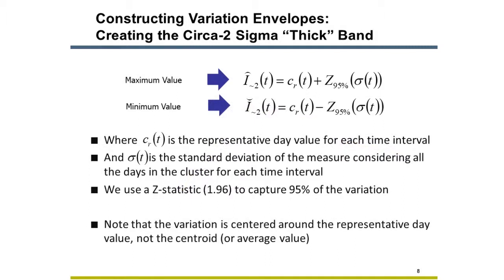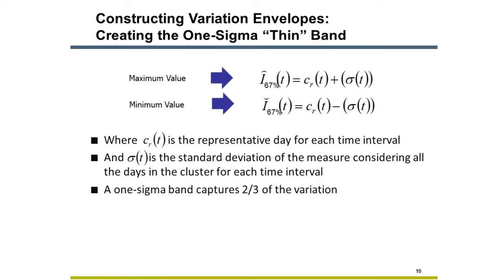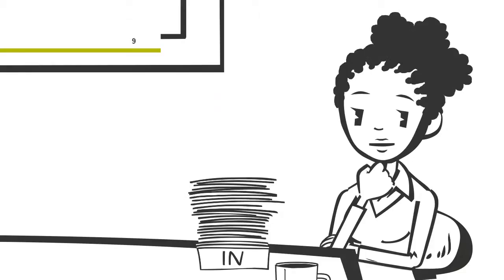The thick band controls for outliers. We build the band around the representative day to capture 95% of the variation observed in each time slice. The thin band contains two-thirds of the variation at each time slice; the width is simply the standard deviation. The thick band is roughly twice the width of the thin band — hence the names: thick band, thin band.